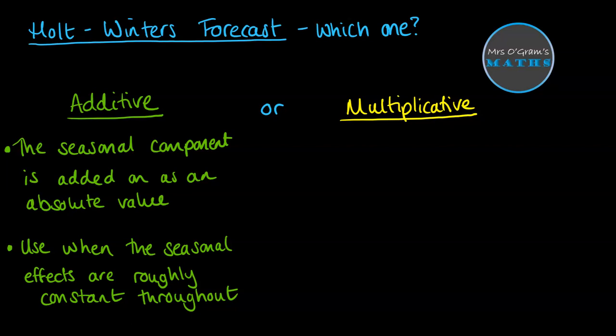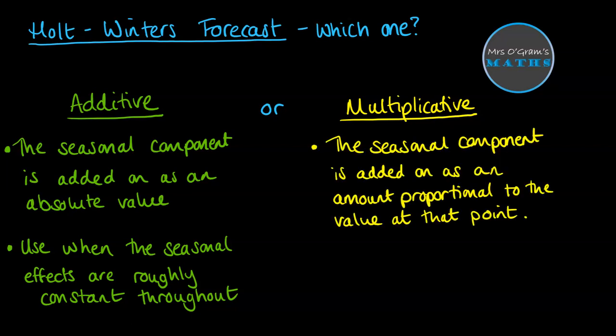Now a multiplicative model, on the other hand, takes that seasonal component and adds it on as a proportional amount. So the value that you add on isn't the same for every season, but it's the same proportion in every season. If you have a higher value of the long-term trend, you would add on a larger seasonal component.